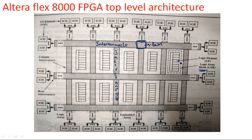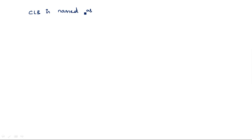Each CLB consists of eight logic elements. All these are in the LAB consisting of eight different logic elements. Each logic element consists of a four-input LUT, a multiplexer, and a pre-multiplexer. CLB is named as LAB — Logic Array Block. Each and every family has different names depending on their uses.